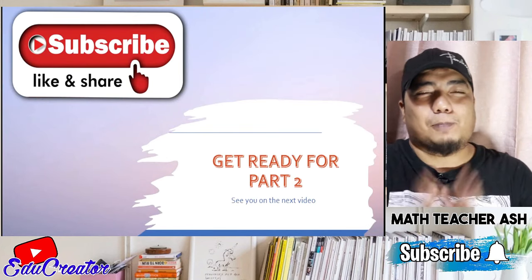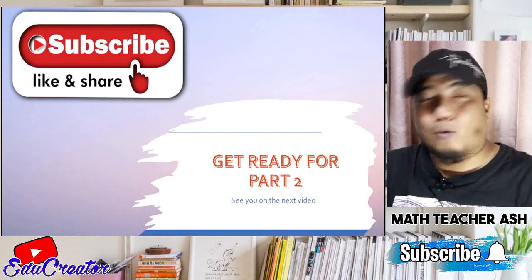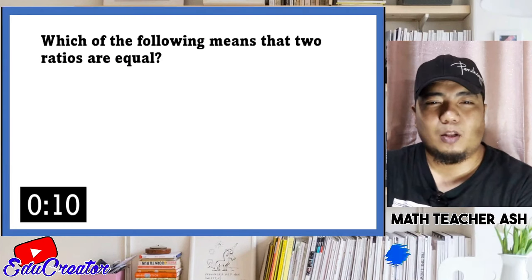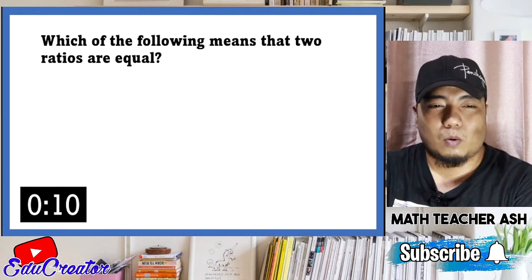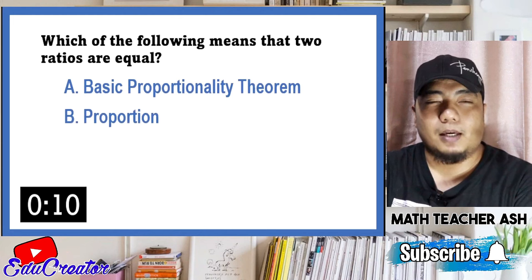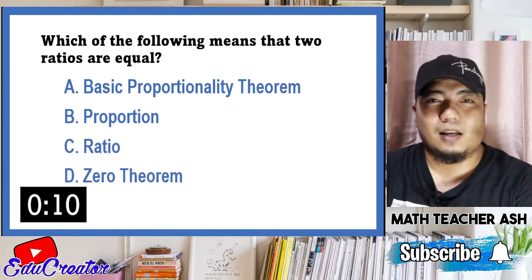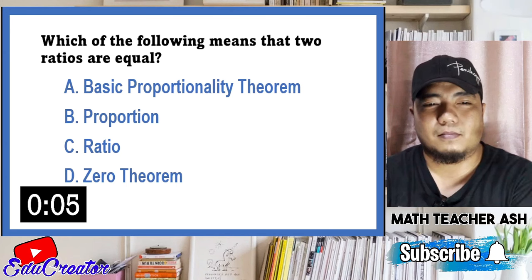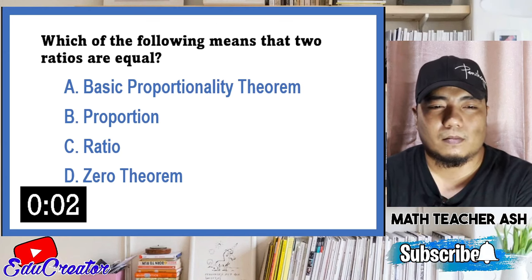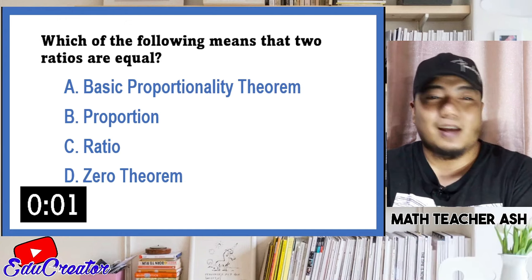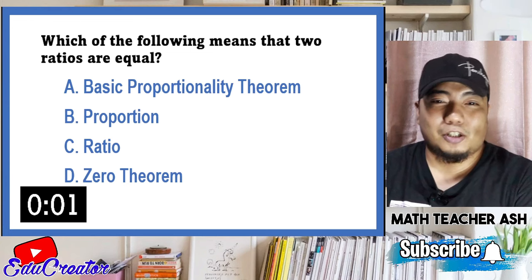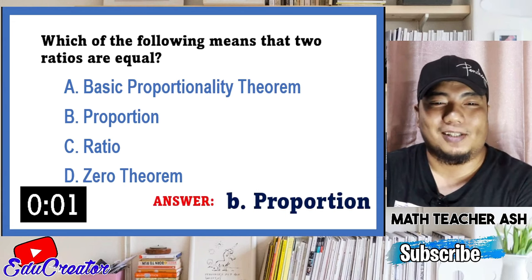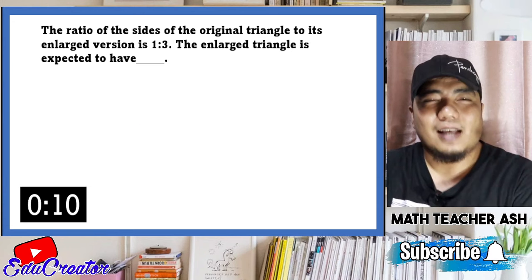That ends our first part of the review. Now let's go to Part 2. Question number one: which of the following means that two ratios are equal? Is it A basic proportionality theorem, B proportion, C ratio, or D zero theorem? This is very easy — the definition of two ratios being equal is owned by the term proportion. The correct answer is letter B.